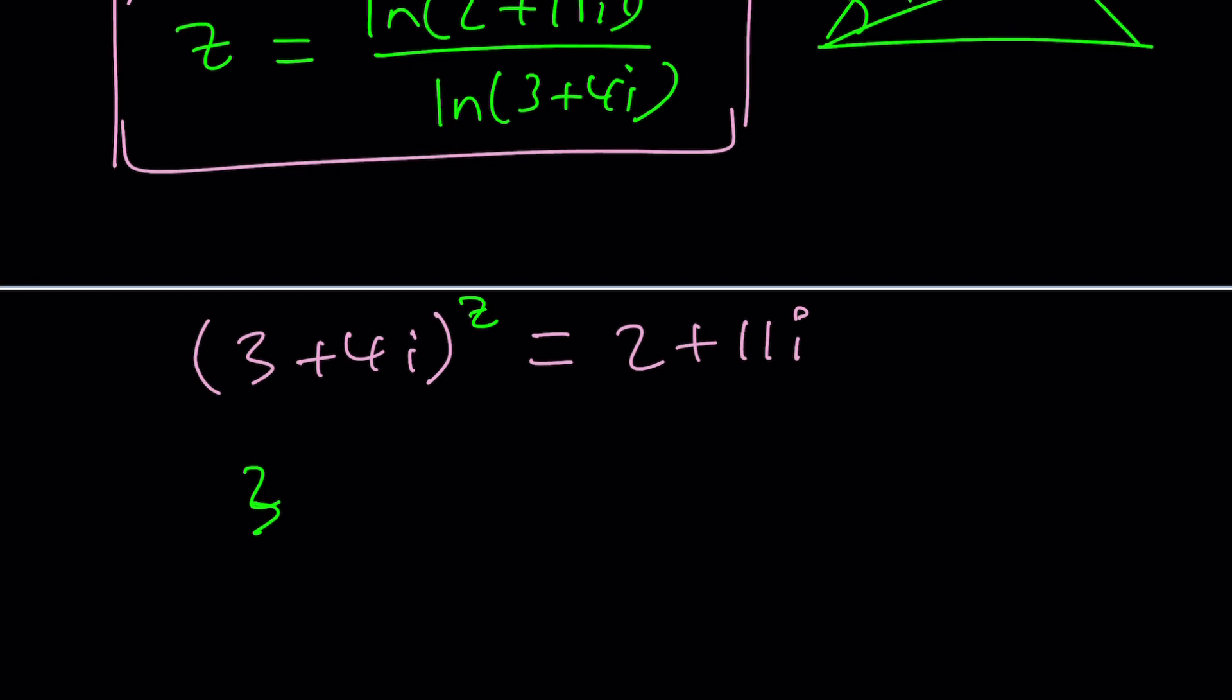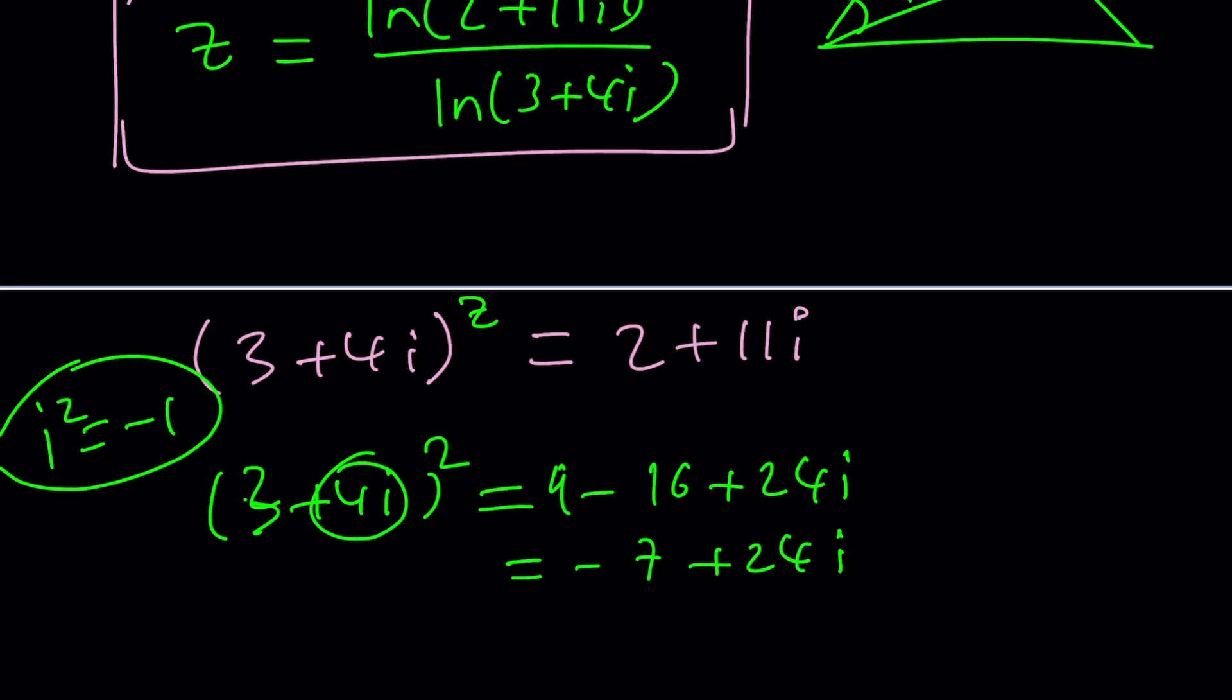Let's give it a try. Take 3 plus 4i squared. 9 and then minus 16. That comes from 16i squared. Don't forget i squared is negative 1 all the time, right? And then plus 24i, which is negative 7 plus 24i. Uh-oh, that didn't quite work. We kind of got negative numbers and this is definitely not the answer. Maybe we can cube it. Nope. The numbers are going to get even bigger. So what do we do?